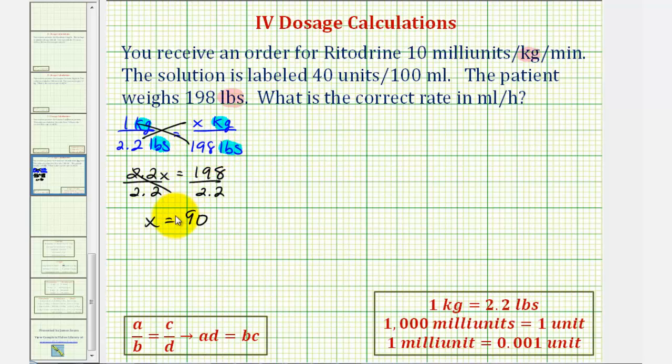Now that we know the patient's weight in kilograms, let's determine how many milliunits the patient needs per minute. The order calls for 10 milliunits per kilogram, so 10 milliunits per one kilogram must equal an unknown number of milliunits, so we'll call it y milliunits, to the patient's weight of 90 kilograms.